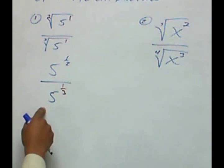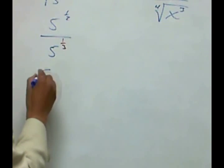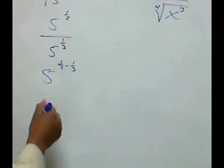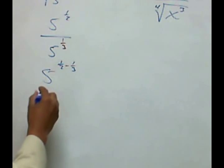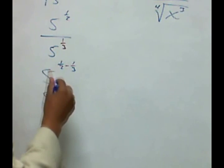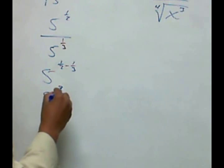Whenever we divide common bases, we subtract exponents. So this would be 5 to the 1/2 minus 1/3. And in order to subtract fractions, we have to have the same denominator. So this would be 5 to the - I'll multiply this by 3/3, which would give us 3/6.